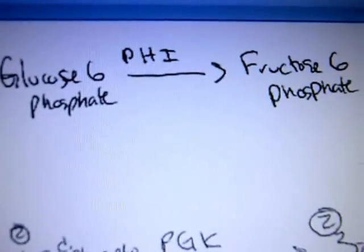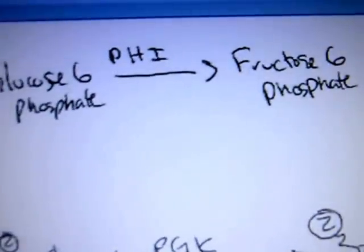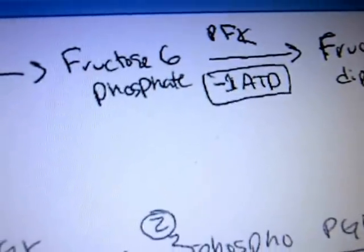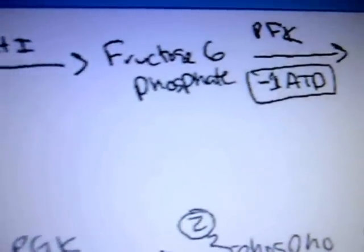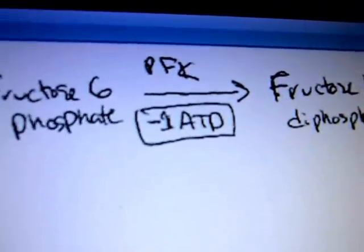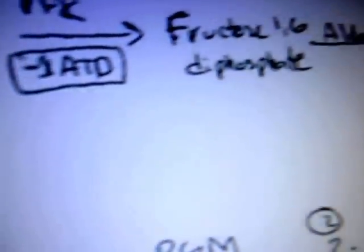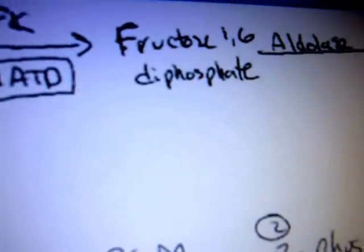Then that is acted upon by phosphohexyl isomerase, phosphohexyl from the 6, turning into fructose 6-phosphate. That fructose 6-phosphate is then acted upon by phosphofructokinase, costing us one more dollar, so we're out in debt two dollars now, but it's alright, because then we have fructose 1,6-diphosphate.